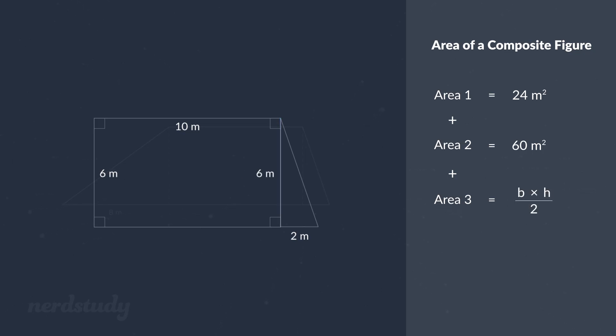So using the area of a triangle formula we plug in the base and height. We get 6 times 2 divided by 2 which equals 6 meters squared.